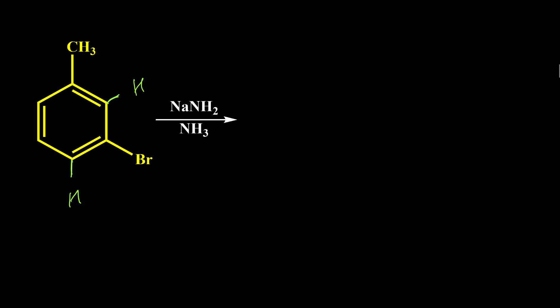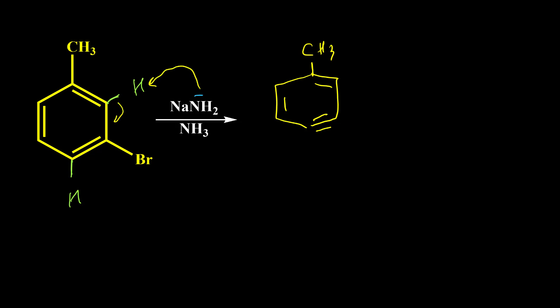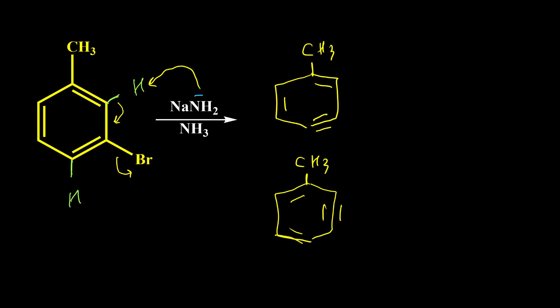Here is another example. In this example we have two possibilities for formation of benzyne. If NH2⁻ takes this hydrogen, we have formation of benzyne here; and if NH2⁻ reacts with this other hydrogen, we have formation of benzyne here. The three pi bonds inside the benzene ring have resonance forms, so I can change their position. Right now we have two different benzyne intermediates.